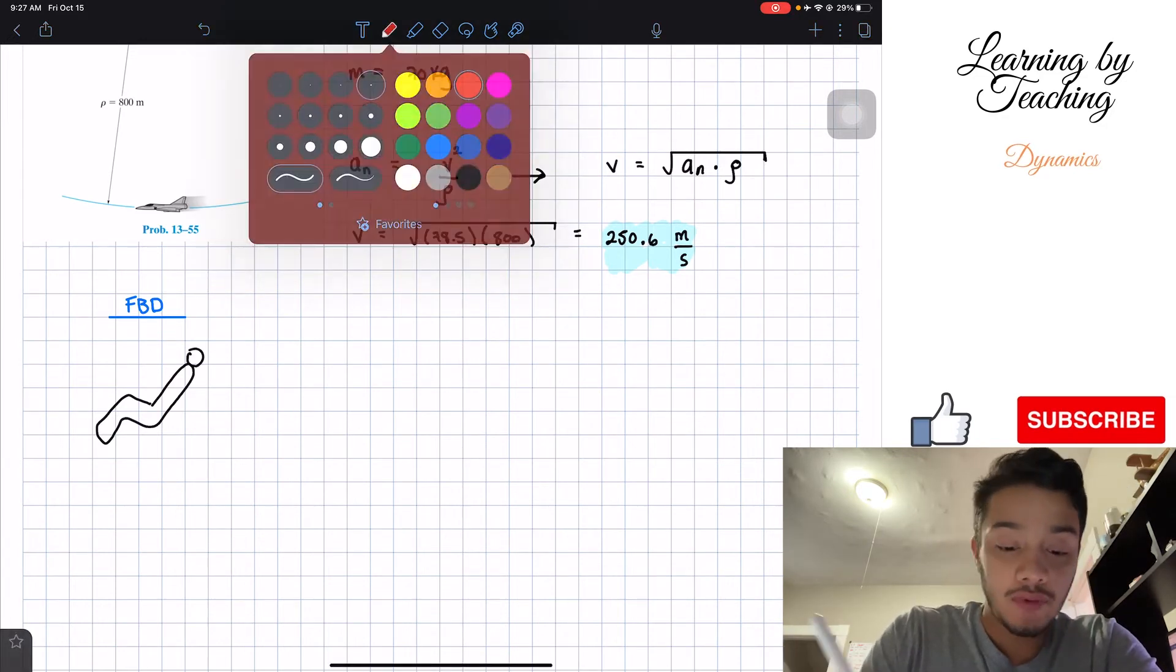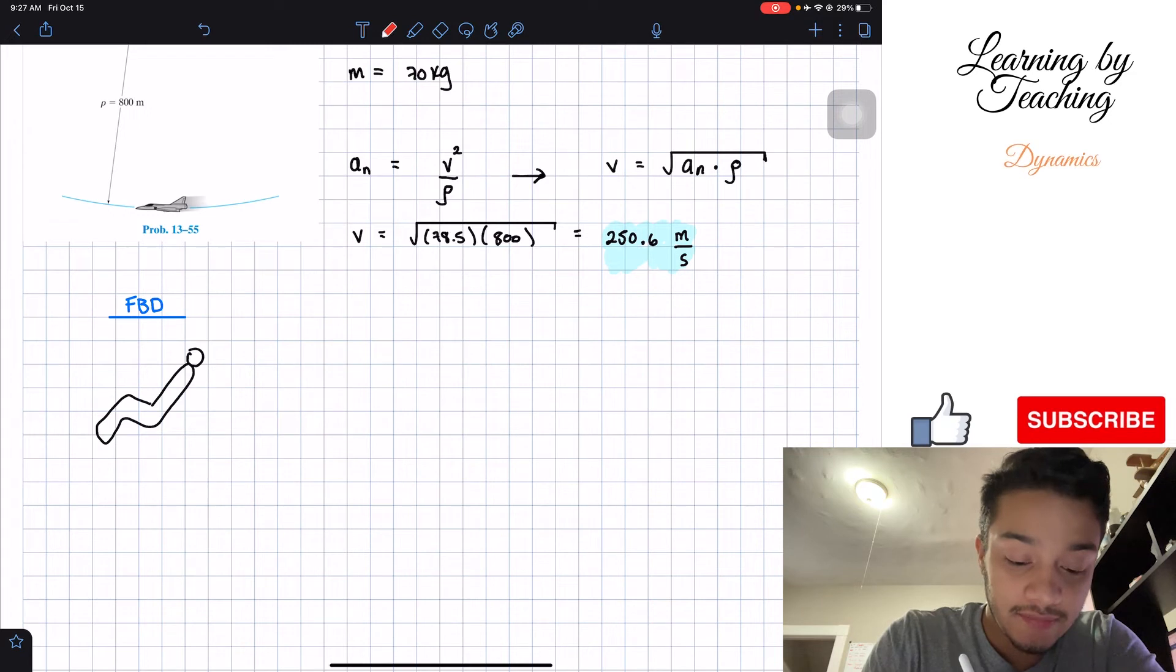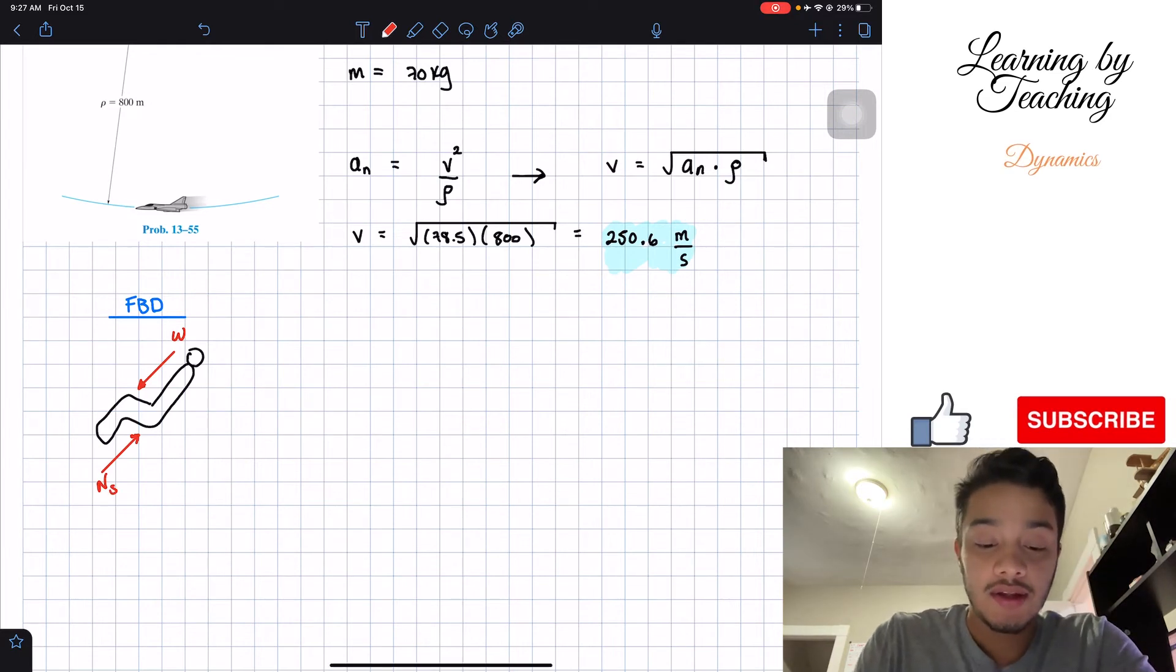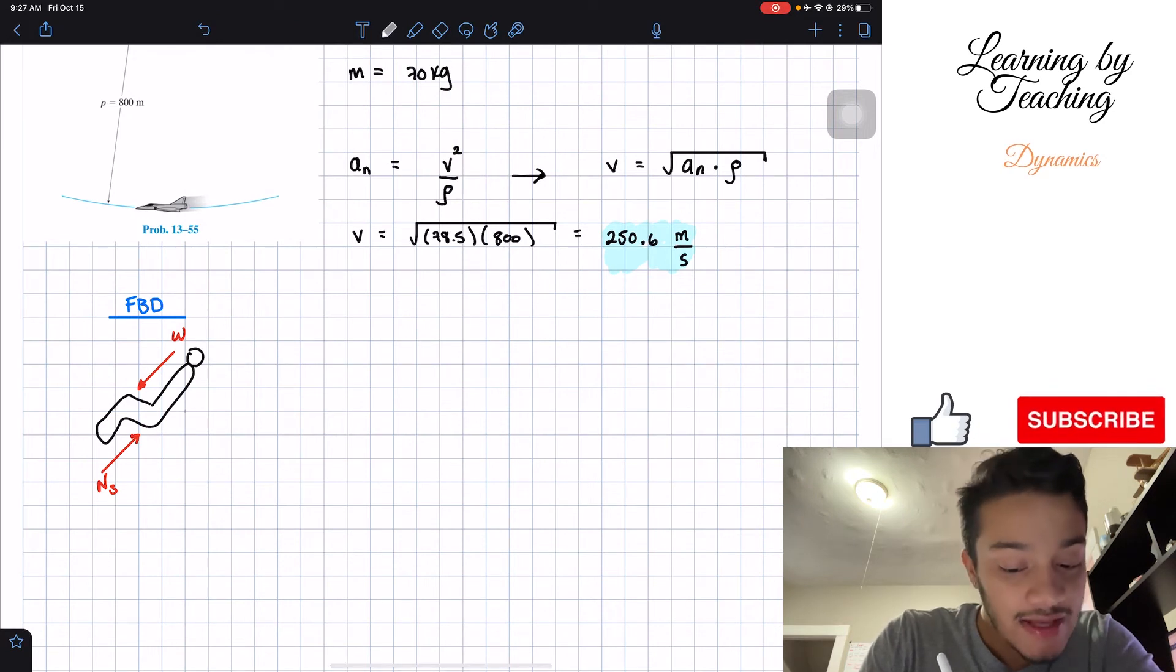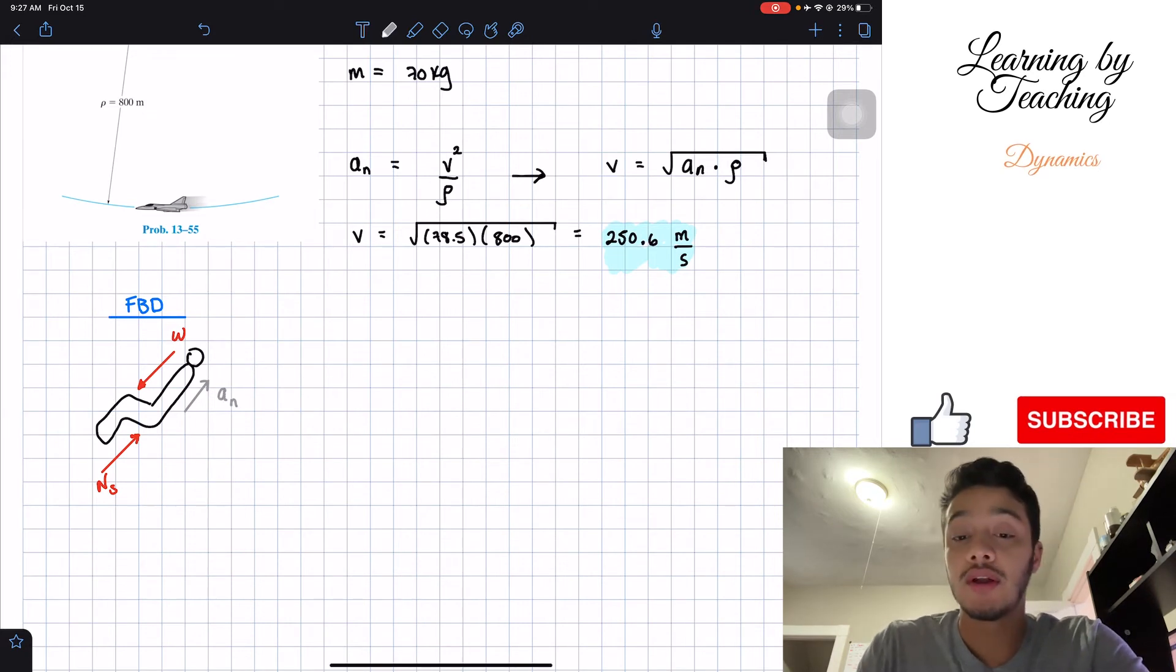We have the weight of the pilot that is going to be pushing it downward in the normal direction. So, this is the weight of the pilot. Then we have the normal that the seat is exerting on the pilot. And those are the only two forces we have.